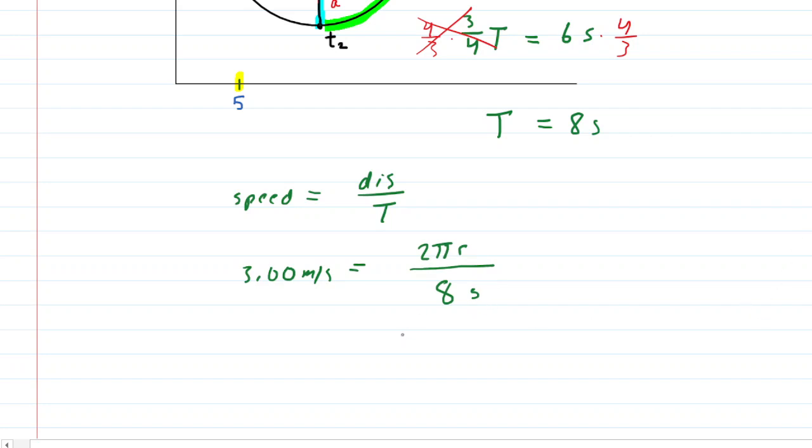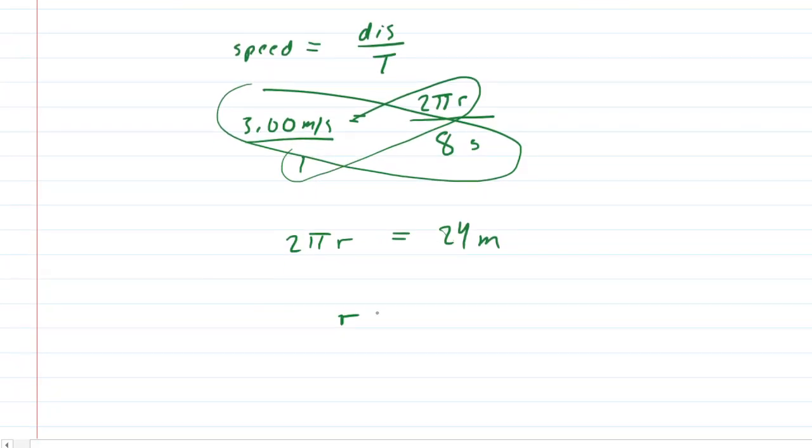So we can now actually solve for the radius. If we sort of put this over one and then cross multiply this way, we would have two pi r. And then we would set that equal to a multiplication this way. And we're going to get 24 meters when we multiply that way. We now divide both sides of this by two pi. And this is great because this is going to give us the radius, which turns out to be approximately 3.82 meters.